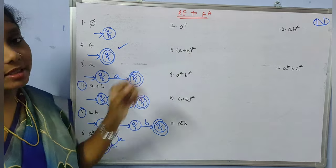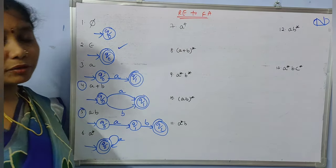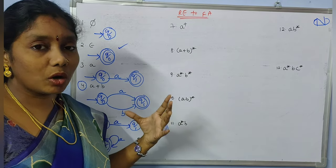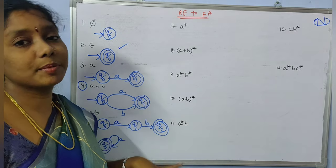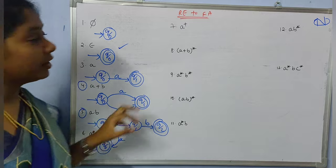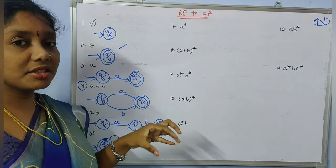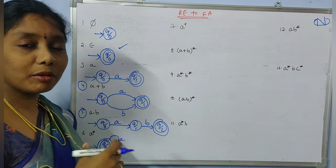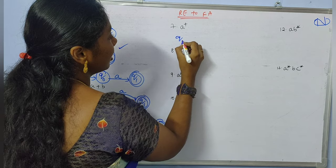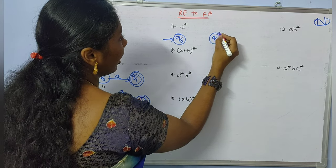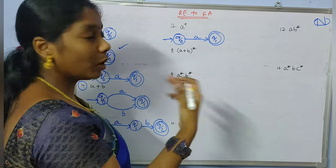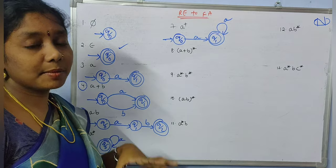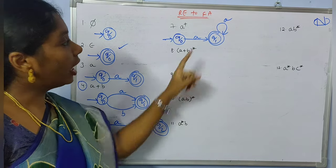Coming to the seventh example, 'a+' — the positive closure of 'a'. Positive closure is almost equal to Kleene closure but it should not include epsilon. Here the minimal string is 'a' itself, so it must have at least one 'a' and after that any number of 'a's. The automata accepts at least one 'a' first, and then any additional 'a's via a self-loop. It should not accept epsilon.